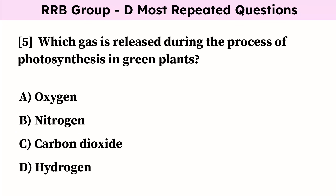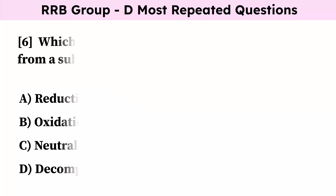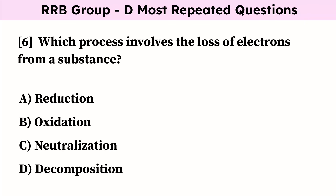Which gas is released during the process of photosynthesis in green plants? Correct answer is oxygen. Which process involves the loss of electrons from a substance? Correct answer is oxidation.